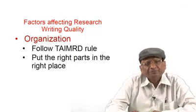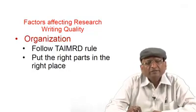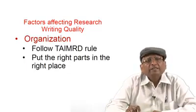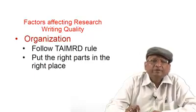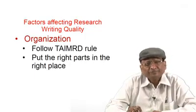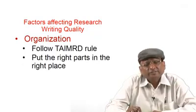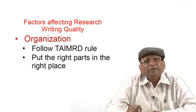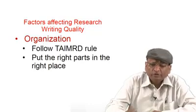The second factor is organization. We have to follow the TAIMRD rule: Title, Abstract, Introduction, Method, Result, and Discussion or Conclusion. That is the very common rule which publishers normally prescribe for authors. The second point in organization is to put the right parts in the right place — whatever is required in the introduction section should not be given in method or result; it should be put in the introduction section.